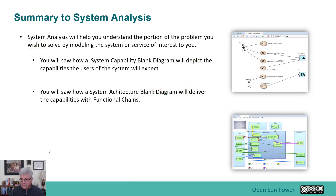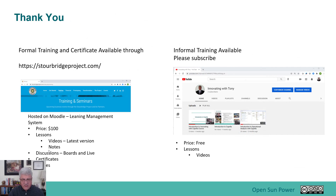In summary, system analysis basically understands what portion of the problem you're going to solve and narrows it down. You saw how the system capability blank diagram helped you depict the capabilities that the user of the system will expect, and you also saw how the system architecture blank diagram delivers those capabilities with functional chains and functions through the system. Thank you very much for listening, and I look forward to you joining the next session on logical architecture.